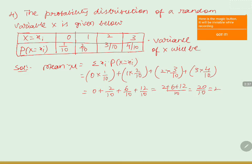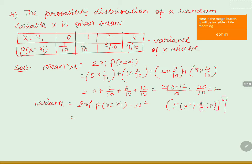That equals to 20 by 10, which equals to 2. So the mean value is 2. Now we will find the variance. Variance equals E of X squared minus E of X whole square, which is the formula for variance.